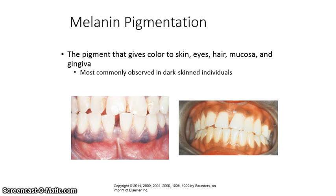Melanin pigmentation is the pigment that gives color to skin, eyes, hair, mucosa, and gingiva, and is most commonly observed in dark-skinned individuals. As you can see in the photographs, it could look purplish on the left or have a brown appearance on the right.